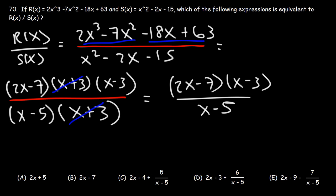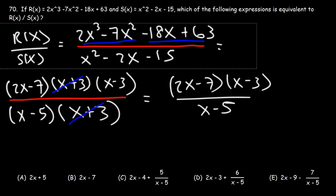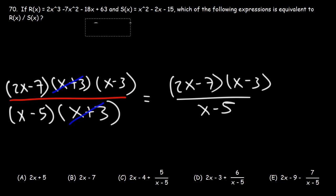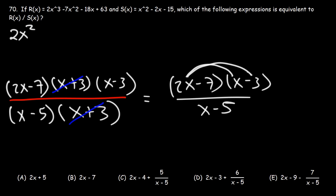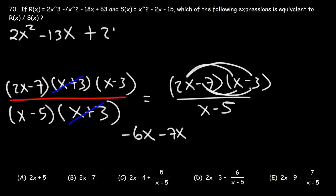This doesn't look like any of the answer choices yet, so we still have more work to do. We're going to FOIL and multiply the two binomials: 2x times x is 2x squared; 2x times negative 3 is negative 6x, combined with negative 7x gives negative 13x; and negative 7 times negative 3 is plus 21. So we have 2x squared minus 13x plus 21 divided by x minus 5.